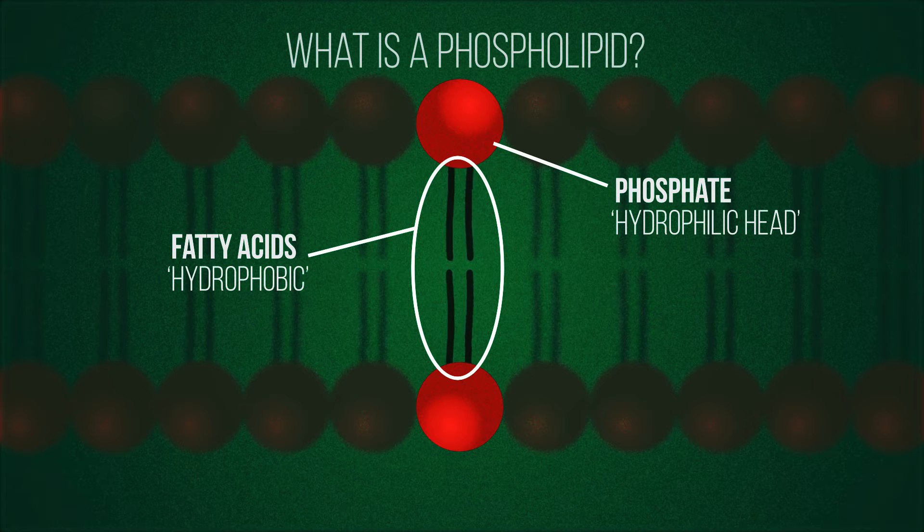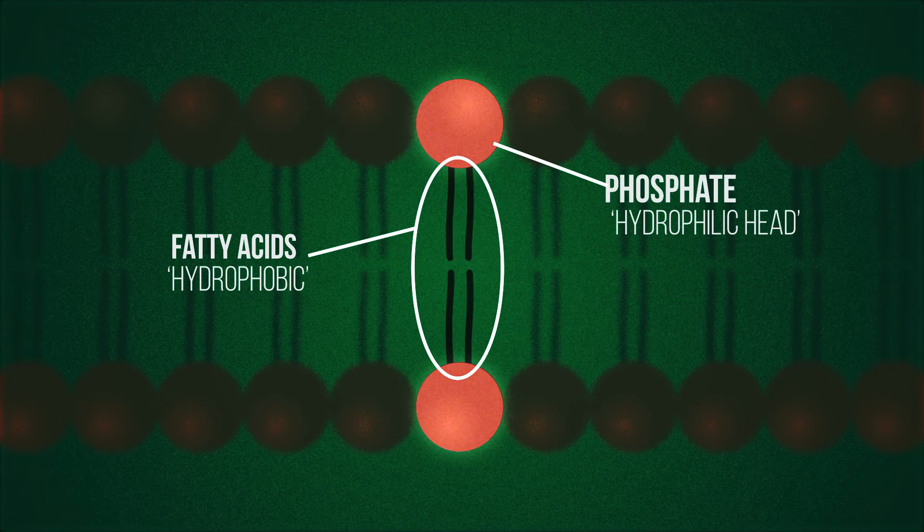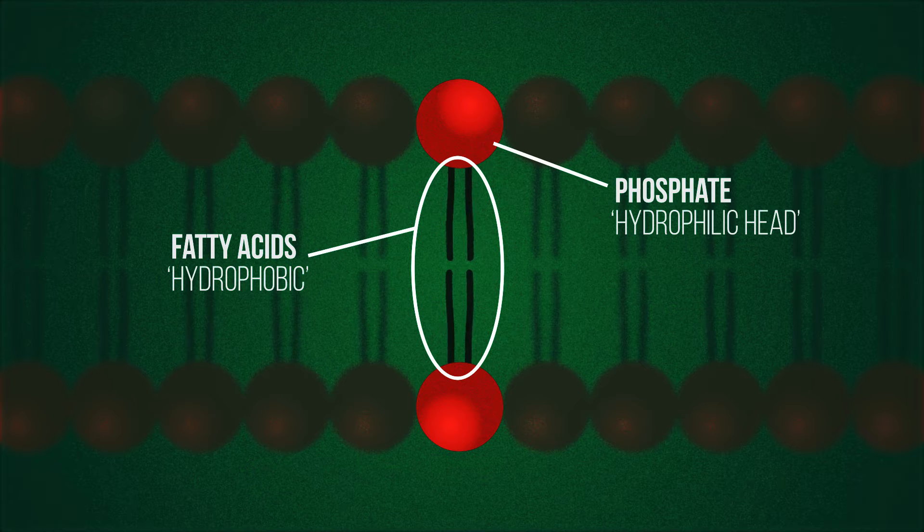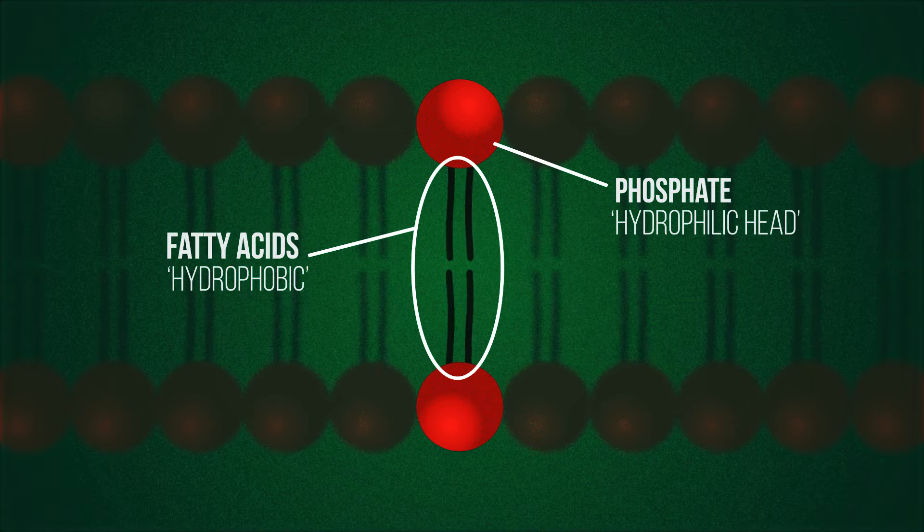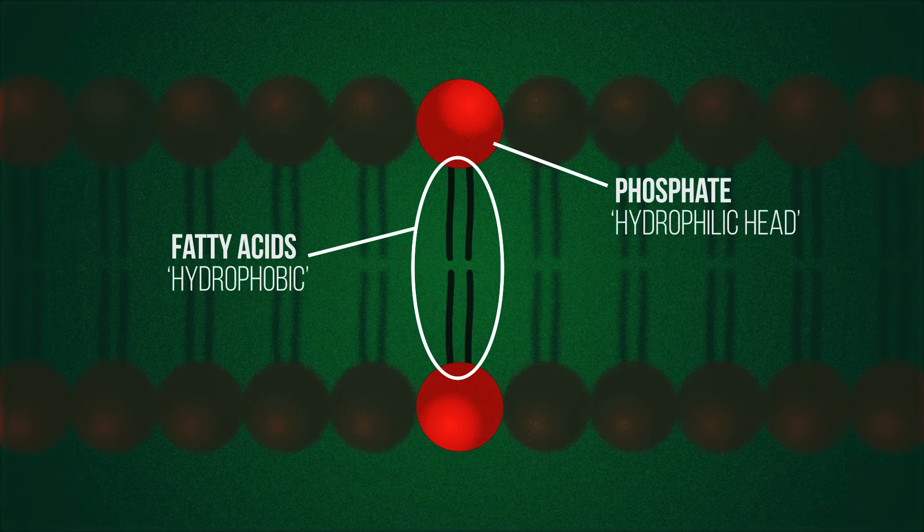But what is a phospholipid? The head is a phosphate molecule that has a slight charge, so is polar, and thus is attracted to water. They are hydrophilic. The two tails are made up of fatty acids that do not have a charge, and so are non-polar, and thus repel water. They are hydrophobic.